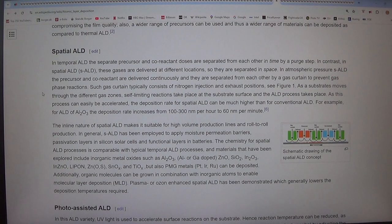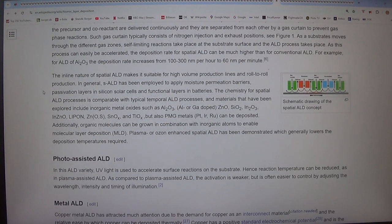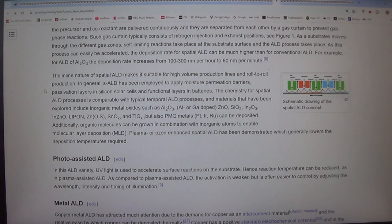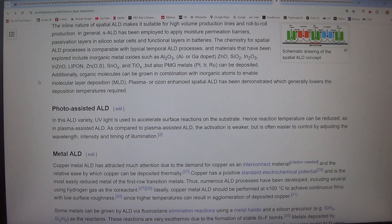The in-line nature of spatial ALD makes it suitable for high volume production lines and roll-to-roll production. In general, SALD has been employed to apply moisture permeation barriers, passivation layers in silicon solar cells and functional layers in batteries. The chemistry for spatial ALD processes is comparable with typical temporal ALD processes. Materials that have been explored include inorganic metal oxides such as Al2O3, ZnO, SiO2, In2O3, SnO, and others, but also PMG metals (Pt, Ir, Ru) can be deposited. Additionally, organic molecules can be grown in combination with inorganic atoms to enable molecular layer deposition (MLD). Plasma or ozone enhanced spatial ALD has been demonstrated which generally lowers the deposition temperatures required.